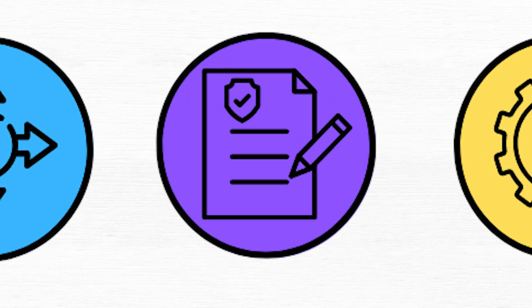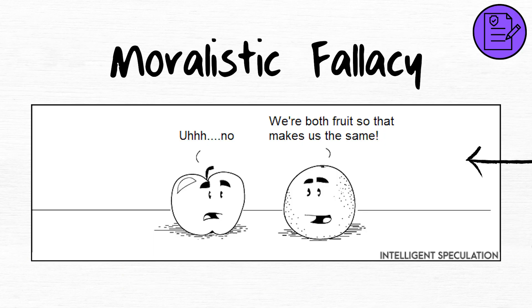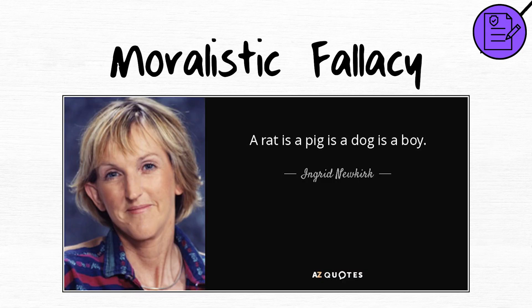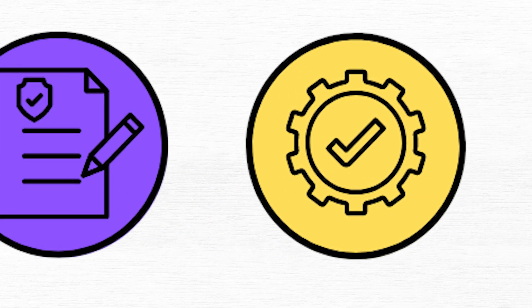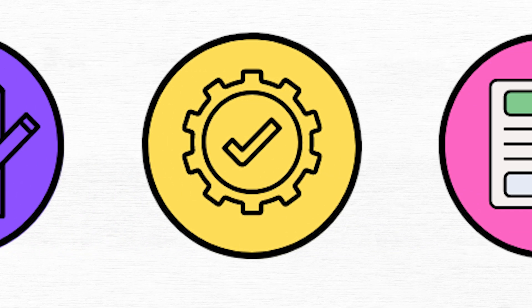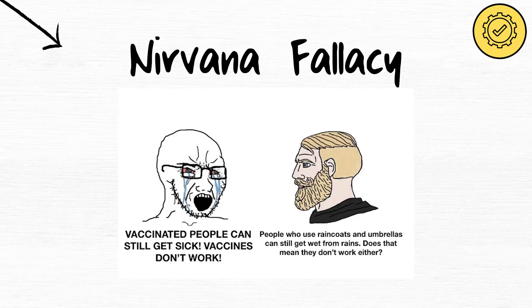Moralistic fallacy. The moralistic fallacy makes claims based on what should be rather than what is. Nirvana fallacy. The nirvana fallacy compares a realistic solution to an idealized one.